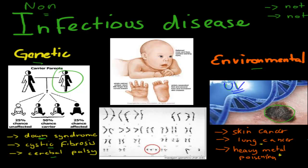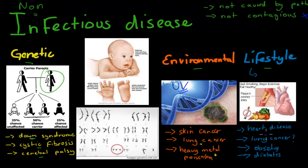Lifestyle diseases are ones you have control over, caused by your lifestyle choices. Heart disease is an example — caused by smoking too much, or not having a healthy lifestyle in terms of food or exercise. Lung cancer can be considered both environmental and lifestyle, because if you're smoking yourself that's your own lifestyle choice — if you stop smoking, you'd have less cancer. Obesity is another example, due to overconsumption of food, and diabetes is also a lifestyle disease, often related to diet and amount of exercise.